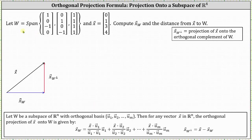For our example, W is equal to the span of a set of three vectors, and vector x is the vector [0, 1, 3, 4]. We're asked to compute the orthogonal projection of vector x onto W, as well as find the distance from vector x to W. The distance from x to W equals the magnitude of the projection of vector x onto the orthogonal complement of W, indicated by vector x sub W-perp.